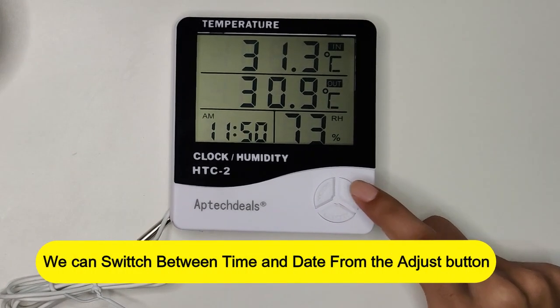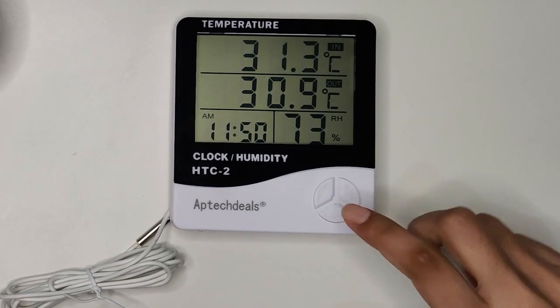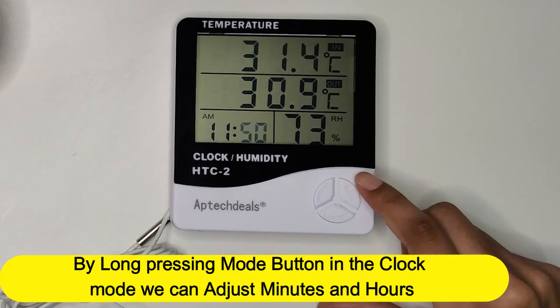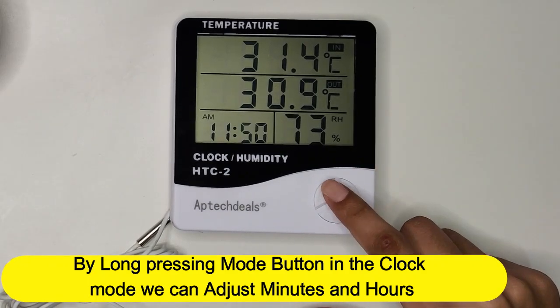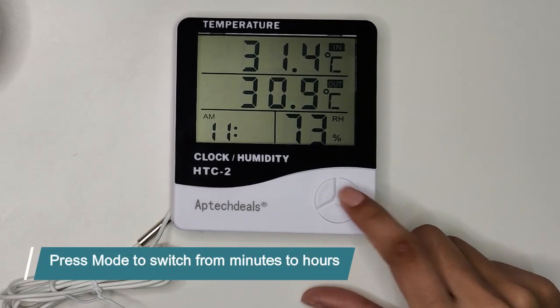We can switch between time and date from the adjust button. By long pressing the mode button in clock mode, we can adjust minutes and hours. Press mode to switch from minutes to hours.